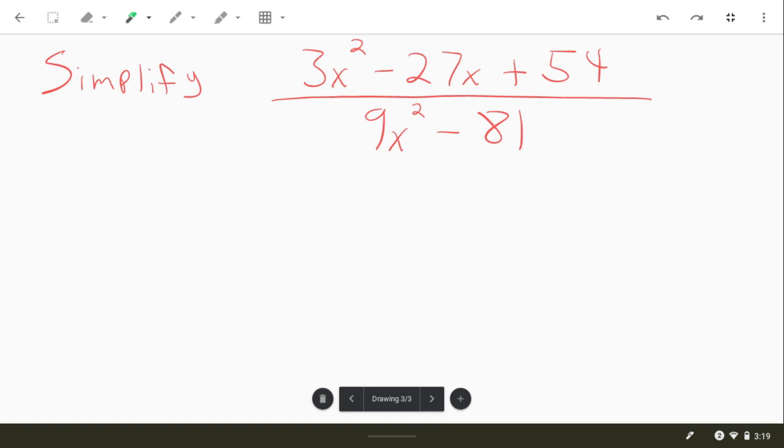What we need to do first is factor the numerator and denominator. So we're going to do a couple of steps here. Now, the denominator, you could jump straight into the difference of squares, 3x minus 9, 3x plus 9. But we need to factor out that GCF first. We always want to do that.